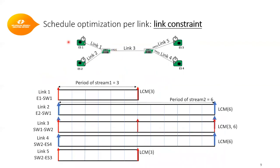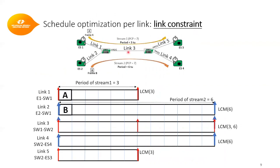Now the link constraint requires a more complicated example with two streams. Both streams are of type ST with the highest priority, but stream 1 has a period of three time units while stream 2 has a period of six time units, and both have size equal to one full frame size. Frame A, belonging to stream 1, is transmitted from ES1 to ES3 through links 1, 3, and 5. Frame B, belonging to stream 2, is transmitted from ES2 through links 2, 3, and 4, received at ES4.